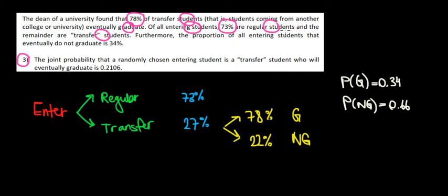Also, the proportion of all students that enter and do not graduate is 34%. The joint probability that a randomly chosen entering student is a transfer student who will also graduate is 0.21. True or false?